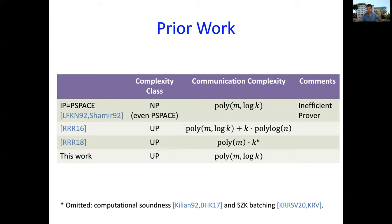In this work, we finally managed to get the best of both worlds. We got UP batching with communication complexity polynomial in M and polylog K. A couple of things I didn't include in this slide are works that consider computational soundness, where you only want soundness against a computationally bounded cheating prover. Those works also typically rely on some cryptographic assumption, whereas our results are unconditional. Also a separate line of work from this year looks at batch verification for ZK, focusing on zero knowledge, which is not our focus.